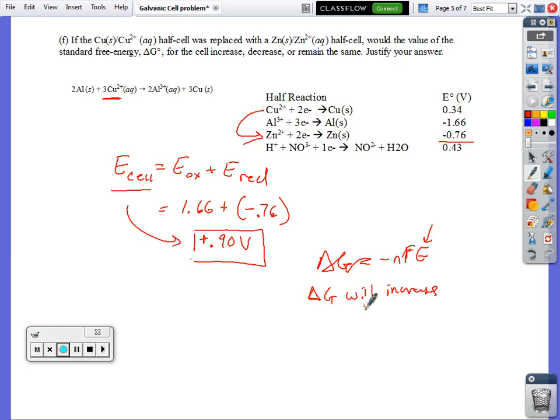or be less negative, to specify my meaning. Looking at the value of our equation, and again, you want to justify it with the equation, you have a lower E, which means you have a less negative delta G. Okay, I'll come back with the last part, part G, to talk about calculating with current and moles.